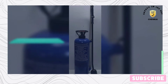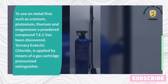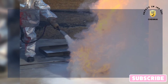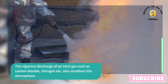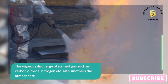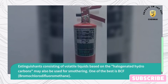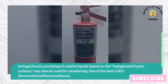To use on metal fires such as uranium, plutonium, thorium and magnesium, a powdered compound TEC has been discovered. Ternary eutectic chloride is applied by means of a gas cartridge pressurized extinguisher. The vigorous discharge of an inert gas such as carbon dioxide, nitrogen, etc., also smothers the atmosphere. Extinguishers consisting of volatile liquids based on halogenated hydrocarbons may also be used for smothering. One of the best is BCF — bromochlorodifluoromethane.